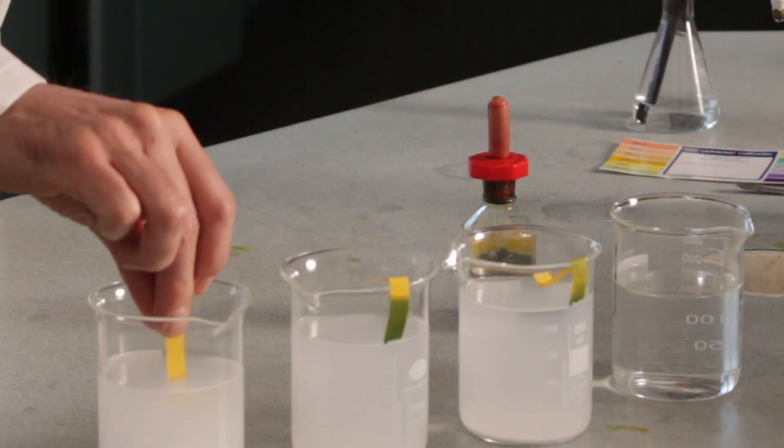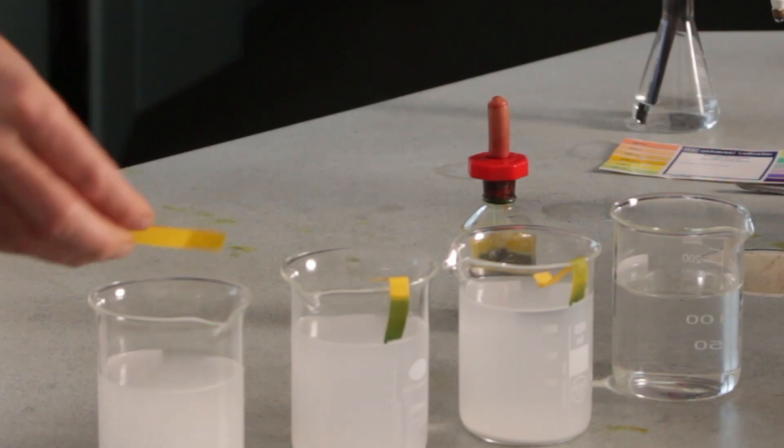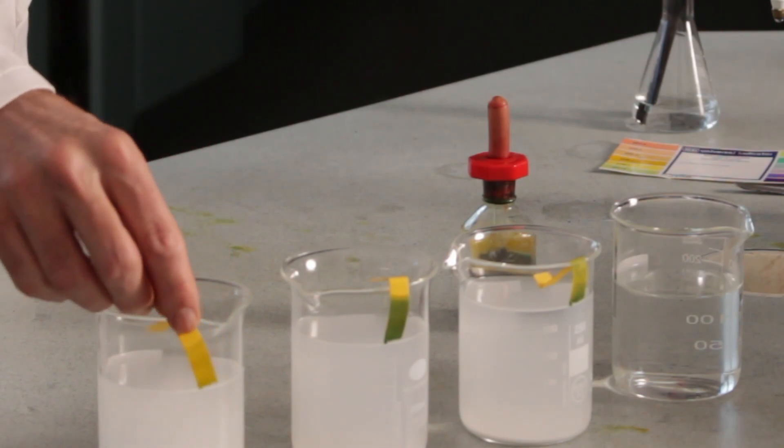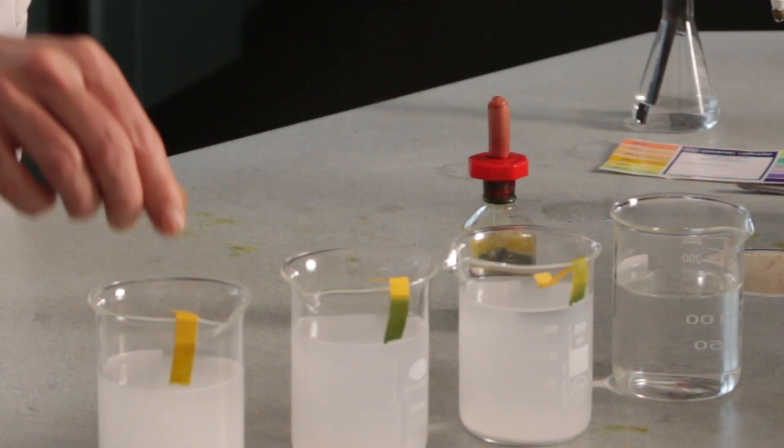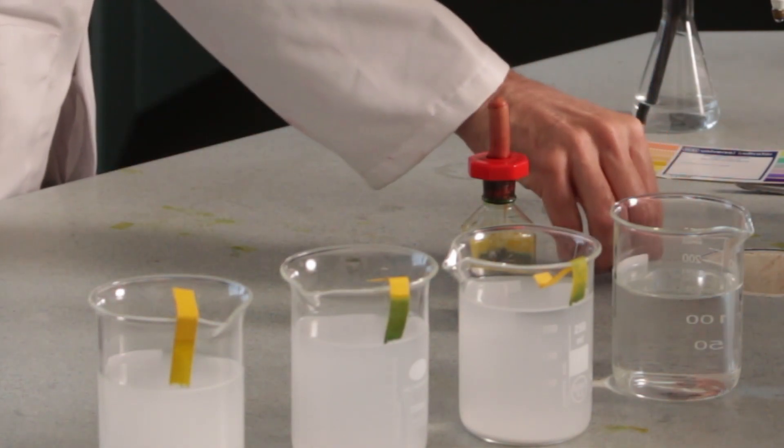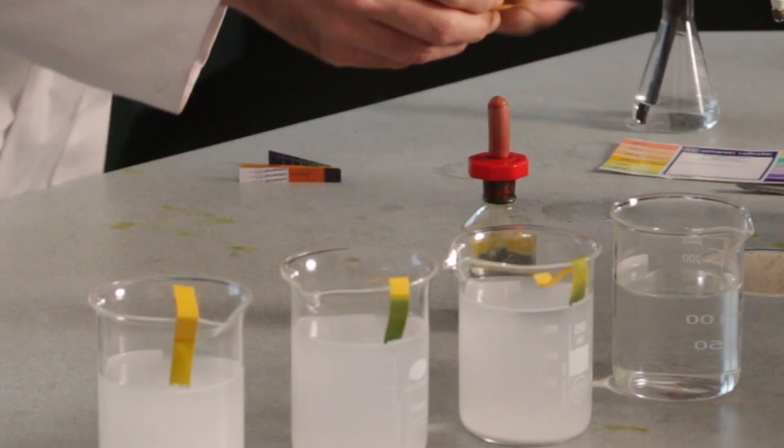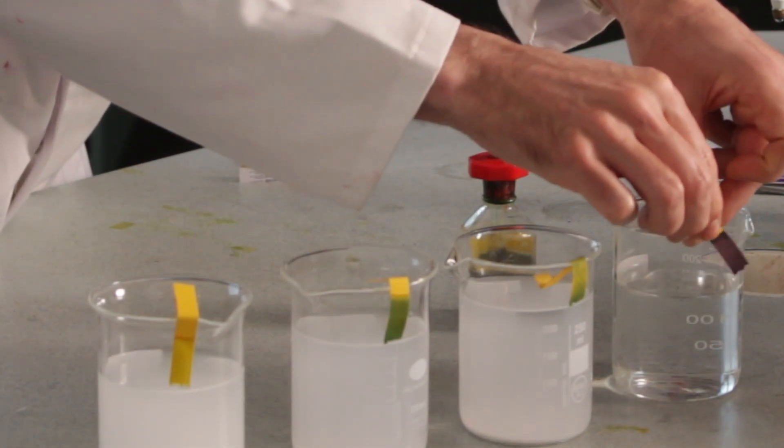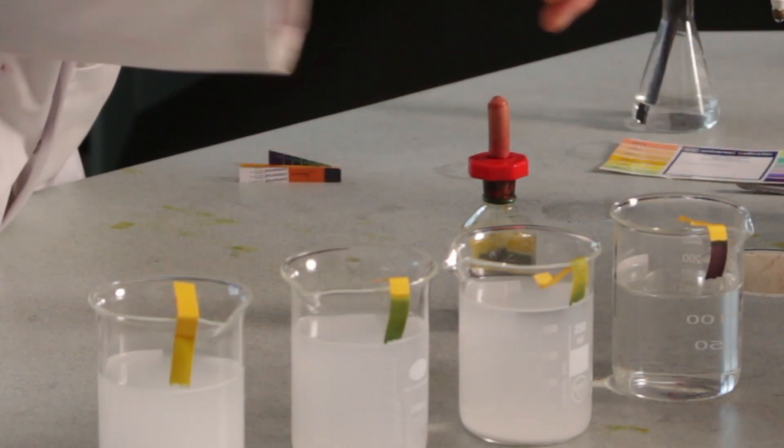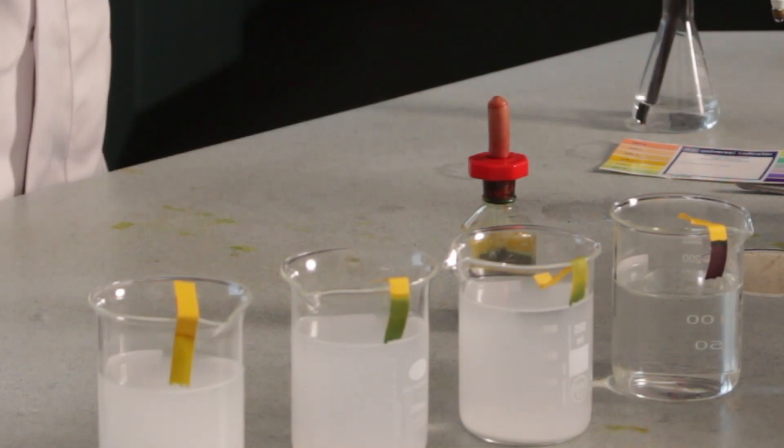And this one hardly changes colour at all, of course, because remember that pH is neutral. So hopefully you can see, if I put them all up against there, you can see the different colours on the indicator paper.